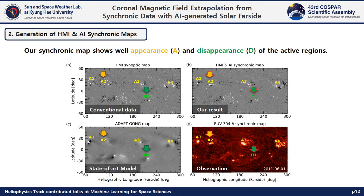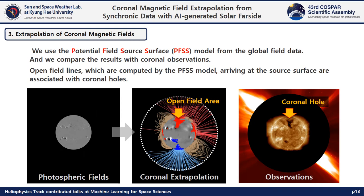Here is a comparison of far-side magnetic field maps and a EUV-based synchronic map. The ADAPT-GONG map is based on a magnetic surface flux transport model, and our synchronic map represents the appearance and disappearance of active regions. We use the synchronic map as a bottom boundary condition to extrapolate coronal fields using the potential field source surface (PFSS) model; open field lines arriving at the source surface are associated with coronal holes. We predict open field areas from the extrapolation results and compare those with coronal holes observed in EUV emissions.